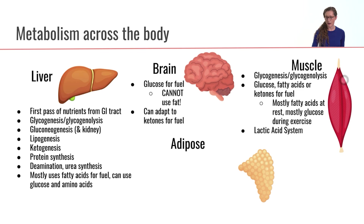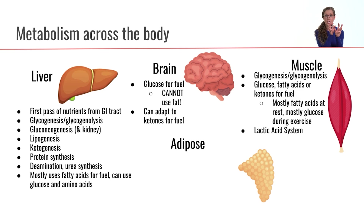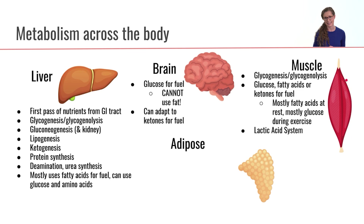The muscle is also involved in the lactic acid system, which is active when there is insufficient oxygen. The lactic acid system allows us to run the first part of glycolysis to generate a little bit of ATP, and then takes all that reduced NADH and oxidizes it back to NAD so we can continue to run that first part of glycolysis.